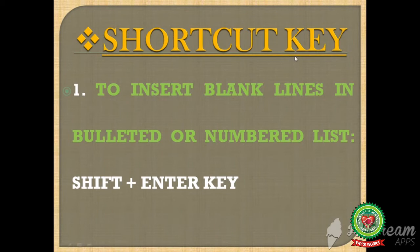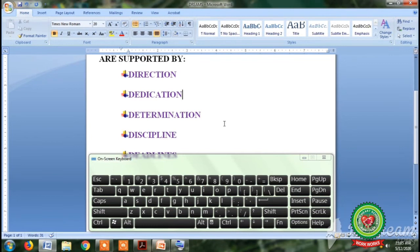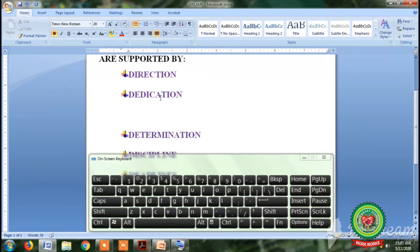The shortcut key to insert blank lines in a bulleted or numbered list is Shift + Enter. Let's do its practical. Suppose you want to insert a blank line in between the bulleted or numbered list — press the shortcut key Shift + Enter from the keyboard. You can see that a blank line is inserted in between the bullets.